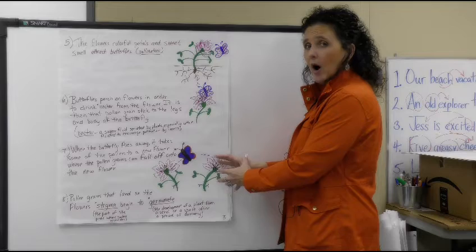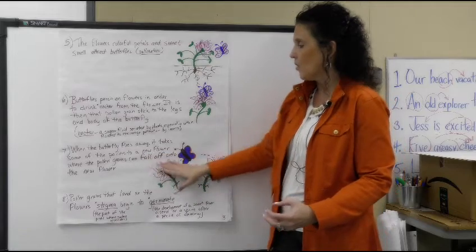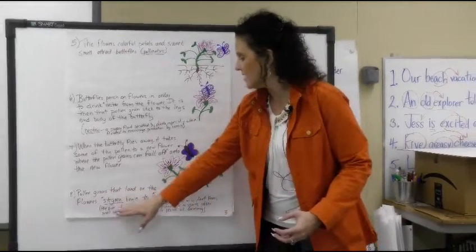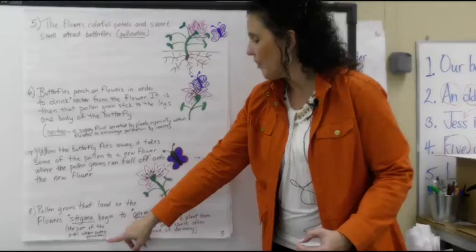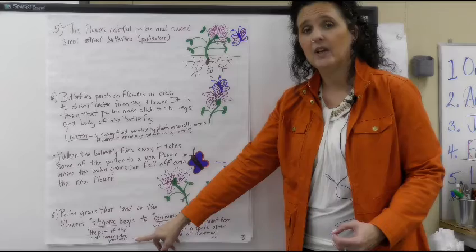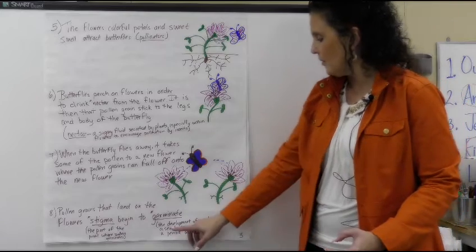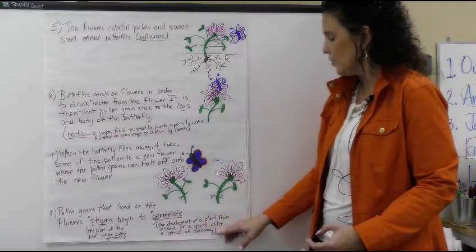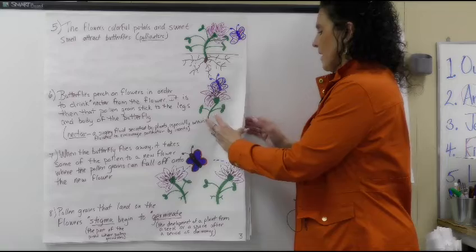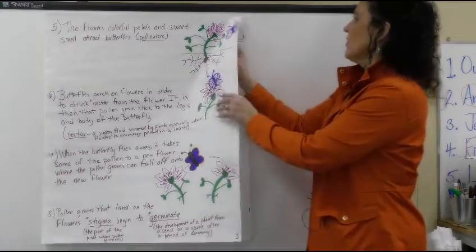The butterfly goes from this flower with all that pollen stuck to it and flies over to another flower, where some of those pollen grains fall off onto it. They land on the flower's stigma, which is the part of the pistil where the pollen germinates. We have a separate video on parts of a flower. Germinate is the development of a plant from a seed or spore after a period of dormancy — dormancy means it was asleep for a little bit. No flowers bloom in the winter, so they're dormant in winter, and then when spring comes they start to bloom.